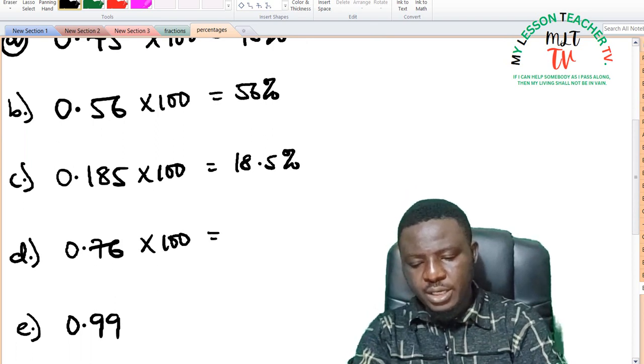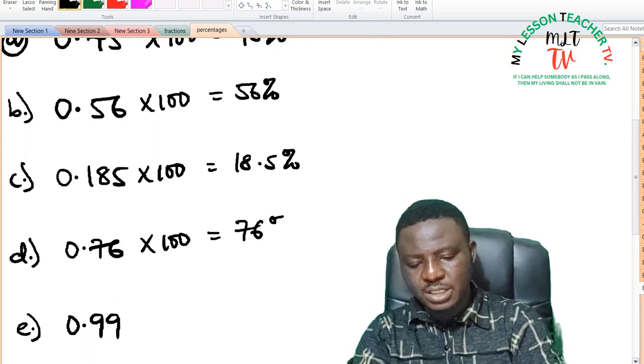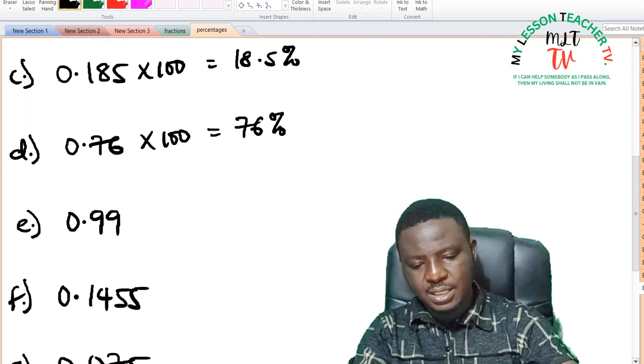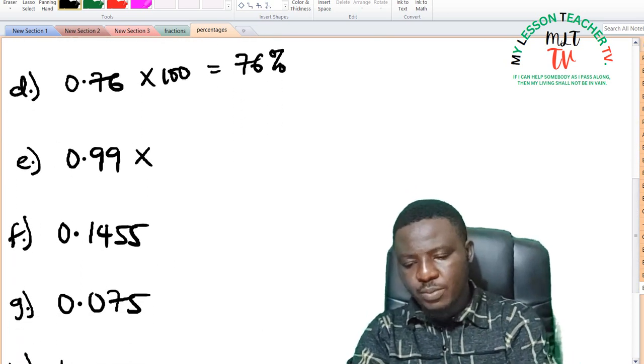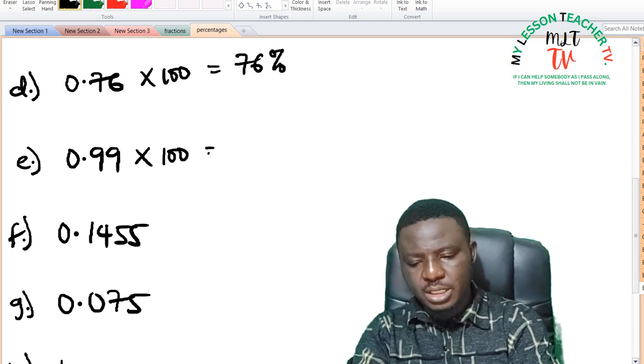You multiply this by 100, it gives you 76%. And when you multiply E by 100, you move the decimal point 2 times, it gives you 99%.